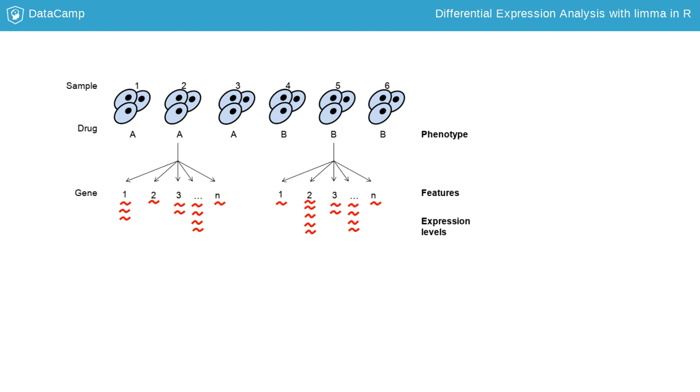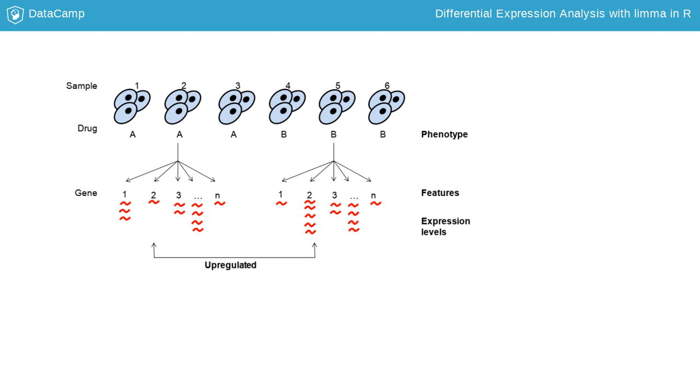The statistical models you will build in this course will test for differences in these measurements between samples with different phenotypes. If a feature has a higher expression level for one group relative to the other, this is called upregulated.